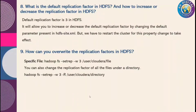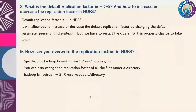Hello friends, welcome to RR Digital. What is the default replication factor in HDFS and how to increase or decrease the replication factor in HDFS? The default replication factor is three in HDFS, so it will always store three copies of the data. You can increase or decrease it by changing the replication property in the hdfs-site.xml file, where by default the replication value is three.